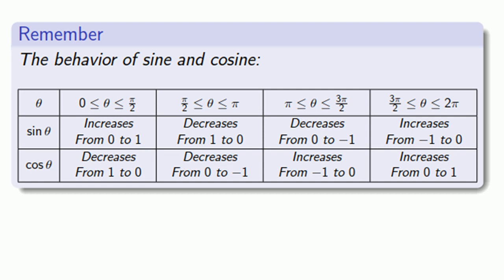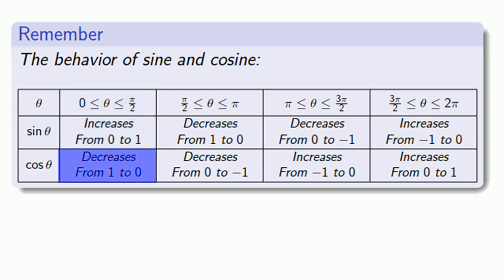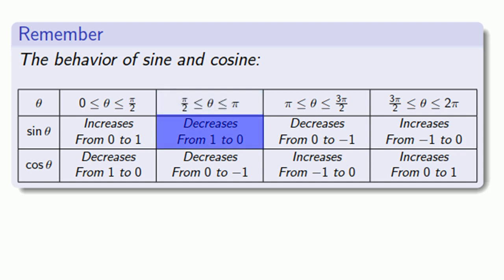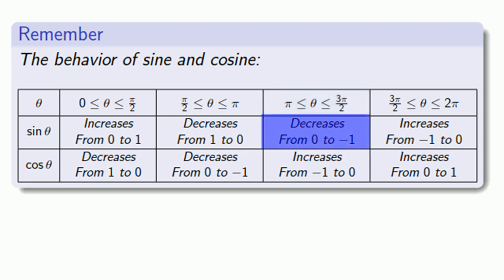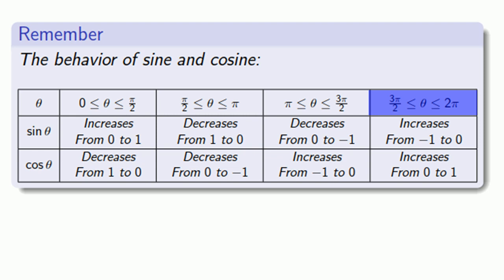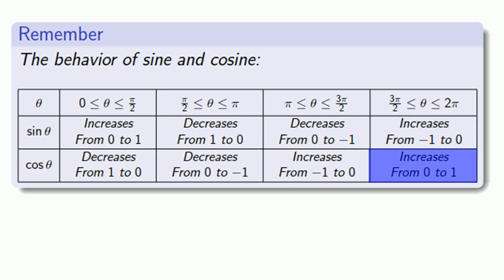Between 0 and pi over 2, sine will increase from 0 to 1, while cosine decreases from 1 down to 0. Between pi over 2 and pi, sine decreases from 1 down to 0, and cosine continues to decrease from 0 down to minus 1. Between pi and 3 pi over 2, sine decreases from 0 to negative 1, and cosine increases from minus 1 to 0. Finally, between 3 pi over 2 and 2 pi, sine increases from minus 1 to 0, and cosine also increases from 0 to 1.